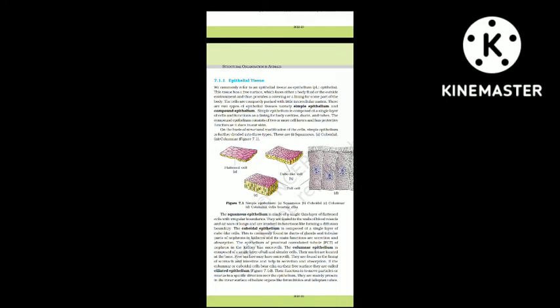Simple epithelium is composed of a single layer of cells and functions as a lining for body cavities, ducts and tubes. The compound epithelium consists of two or more cell layers and has a protective function, as in our skin. On the basis of structural modification of the cells, simple epithelium is further divided into three types: squamous, cuboidal and columnar.